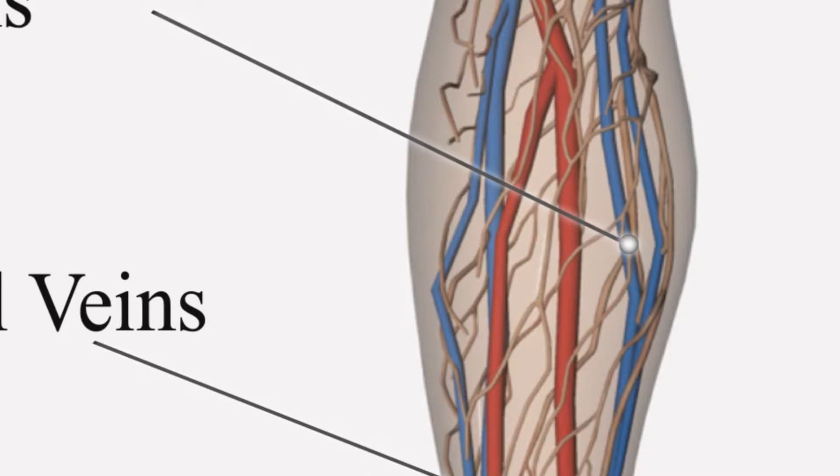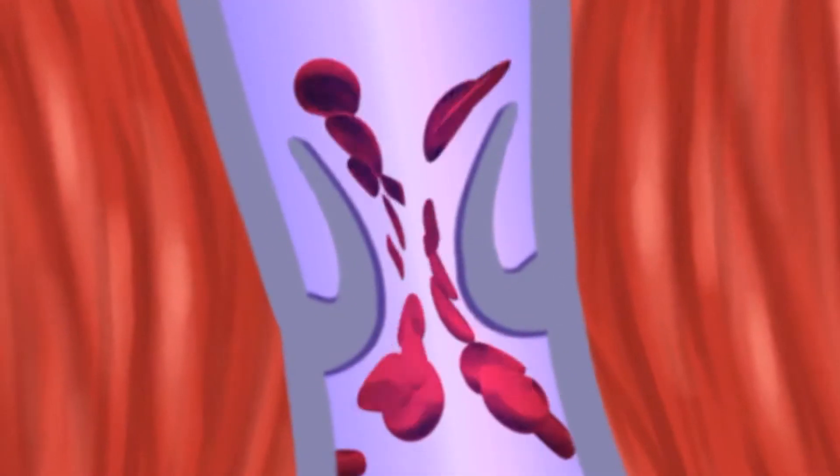They transport blood from the feet back up toward the heart. The superficial and deep veins are connected by perforator veins. The deep veins run between the muscles of the legs.